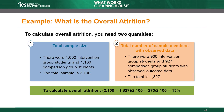We need two quantities to calculate overall attrition: the total size of the randomly assigned sample and the total number of sample members with observed data. We take the difference of these two totals to calculate the total number of students without observed post-test data. We started with 2,100 randomly assigned students. The researchers observed outcome data for 1,827 students. The difference is 273, meaning the researchers did not observe outcome data for 273 students. We divide 273 by 2,100 and get 13%, which is our overall attrition rate.